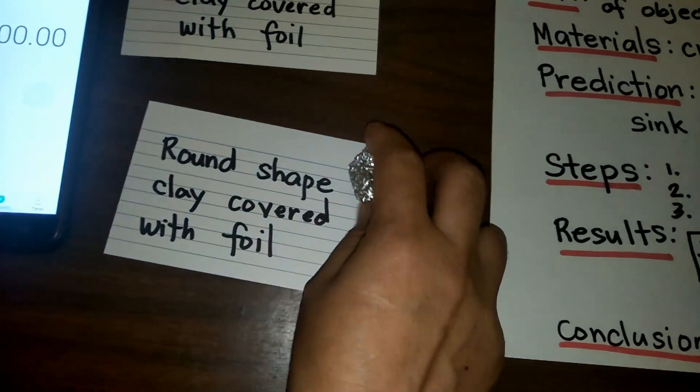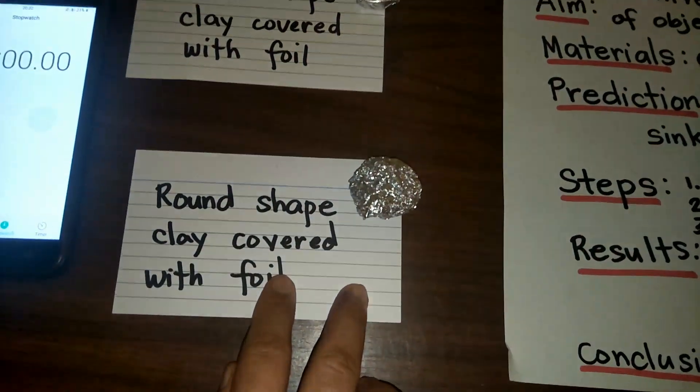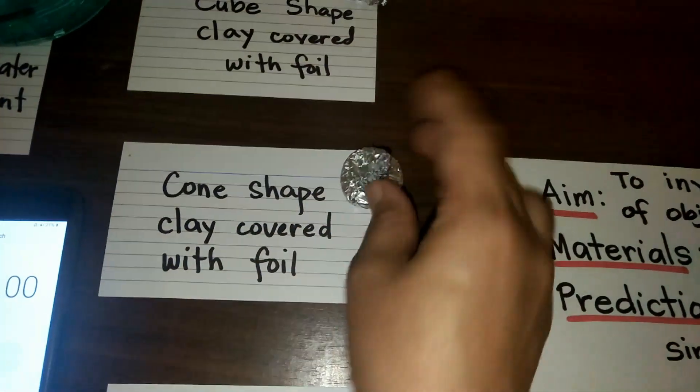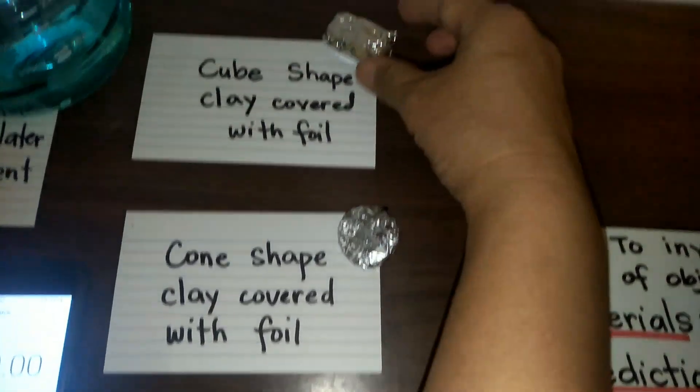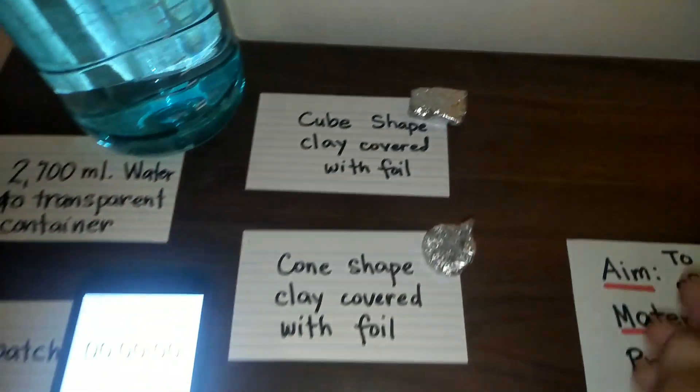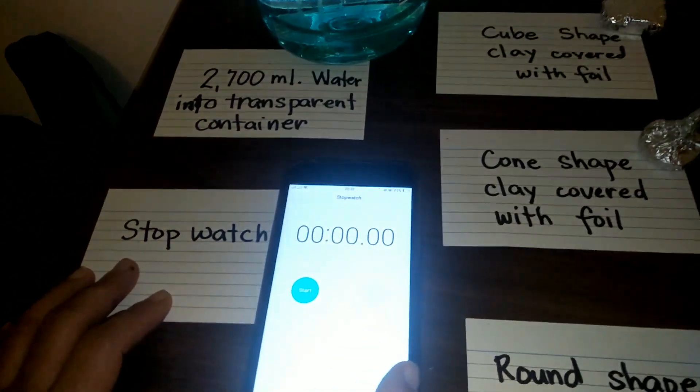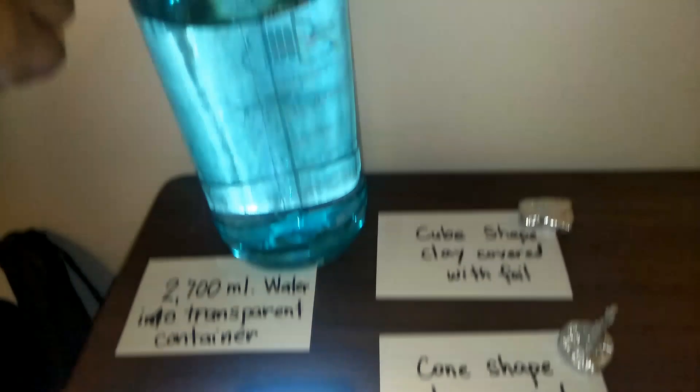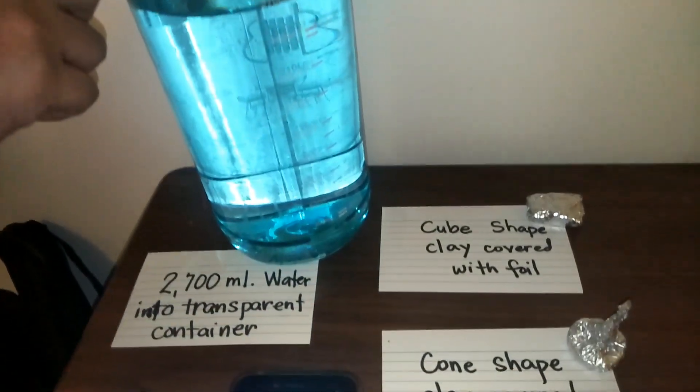The materials are round-shaped clay covered with foil, cone-shaped clay covered with foil, cube shaped clay covered with foil. You also have this stopwatch and water in the transparent container.